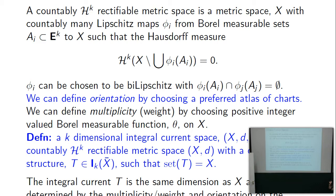An orientation is a preferred atlas of charts — you choose one set of charts. If you have a different atlas, you check that overlapping charts have a positive determinant of the Jacobian, defined almost everywhere for bi-Lipschitz maps. Unlike Riemannian geometry where charts overlap, here our charts are always disjoint. If you add a chart that overlaps, the orientation might switch — the entire space is different.